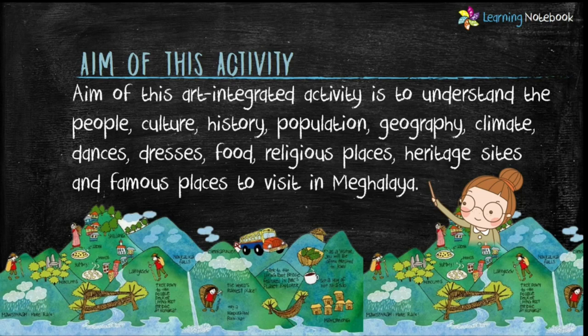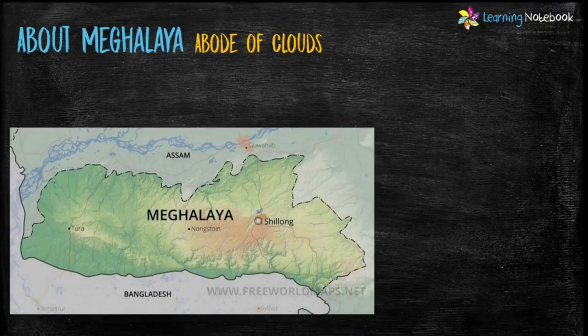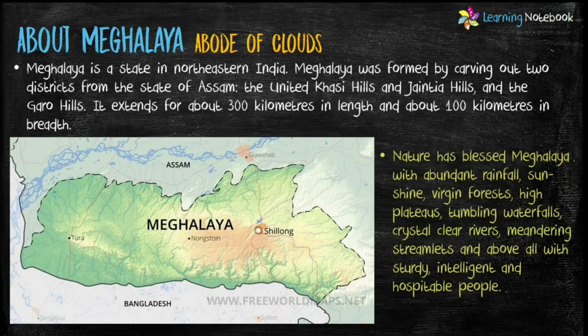The aim of this art integrated activity is to understand the people, culture, history, population, geography, climate, dances, dresses, food, religious places, heritage sites, and other famous places to visit in Meghalaya. Meghalaya, also known as the abode of clouds, is a state in northeastern India. Meghalaya was formed by carving out two districts from the state of Assam — the United Khasi Hills and Jaintia Hills, and the Garo Hills.